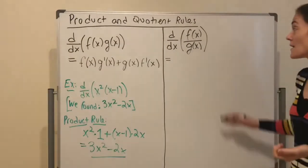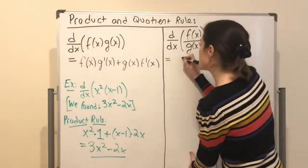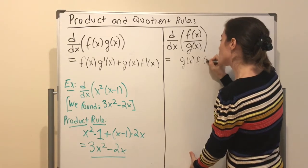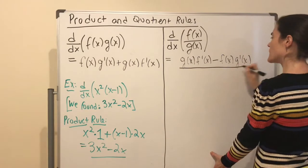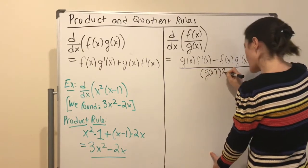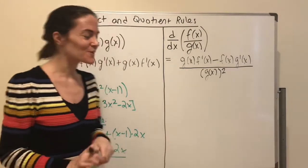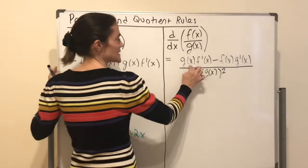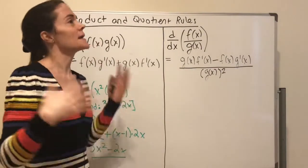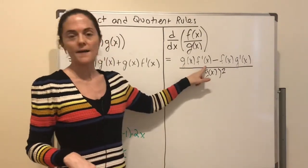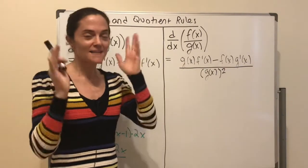For the quotient rule, I say the same thing every time: denominator times derivative of the numerator, minus numerator times derivative of the denominator, all over denominator squared. I've been saying that to myself for over 20 years. Some people say 'low d high minus high d low over low squared,' but I prefer my way of saying it.